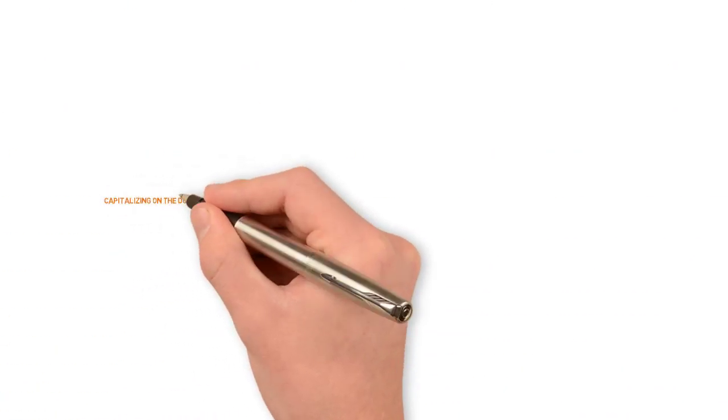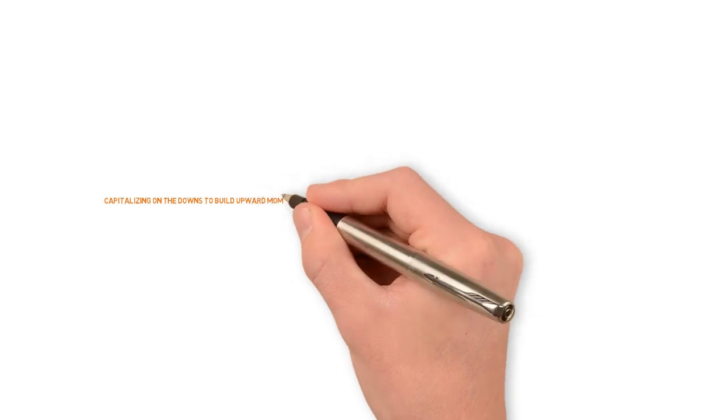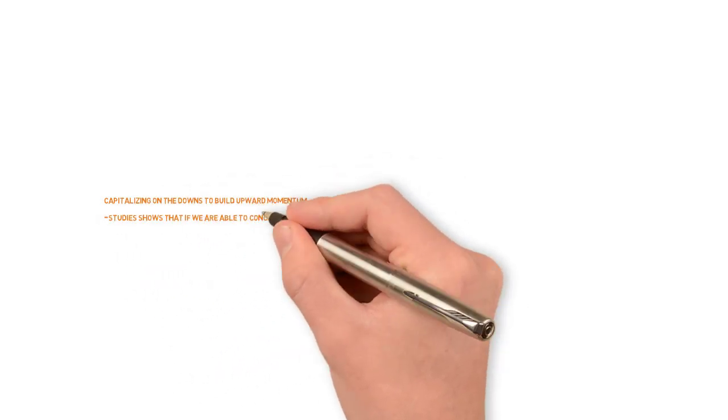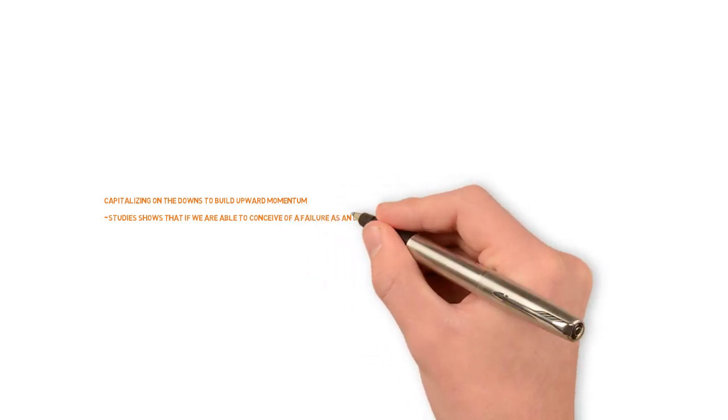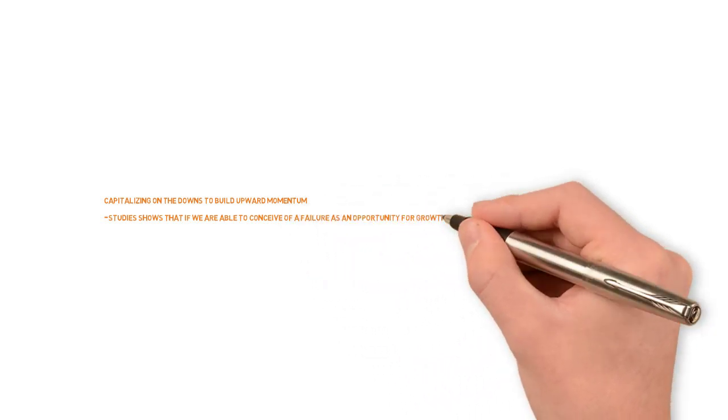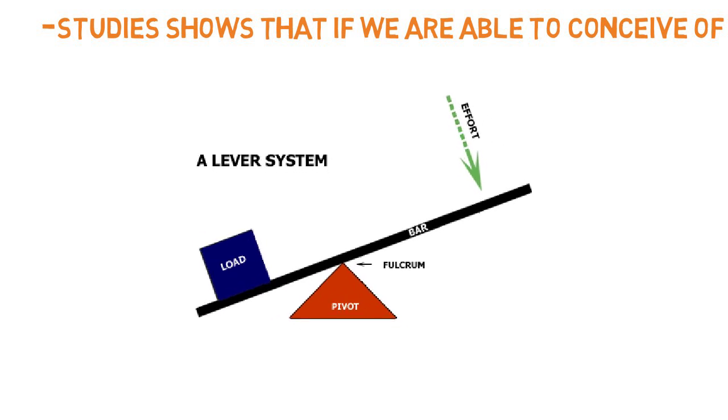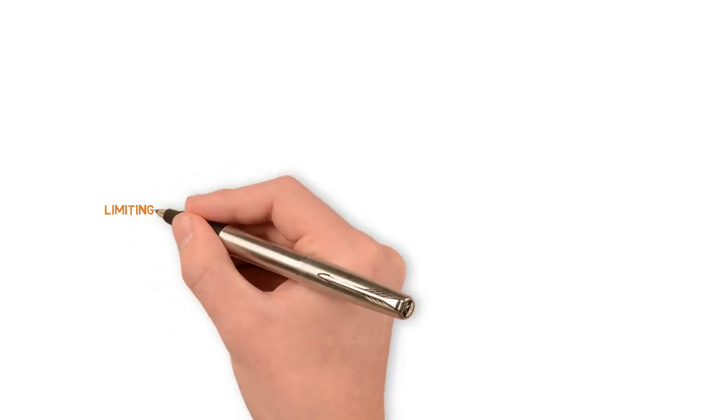The fourth lesson I learned from this book is to try to capitalize on the downs to build upward momentum. Study after study shows that if we are able to conceive of a failure as an opportunity for growth, we are more likely to experience that growth. It's about using the downward momentum to propel ourselves in the opposite direction.